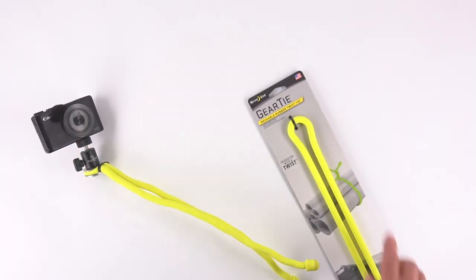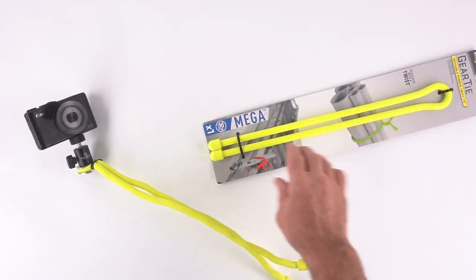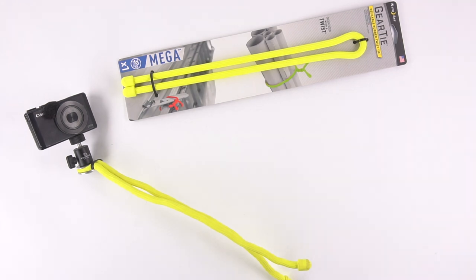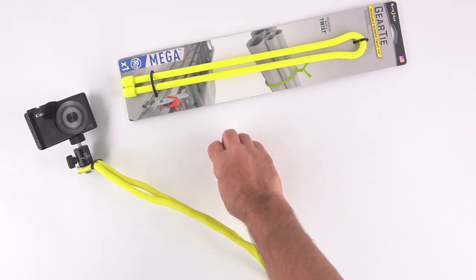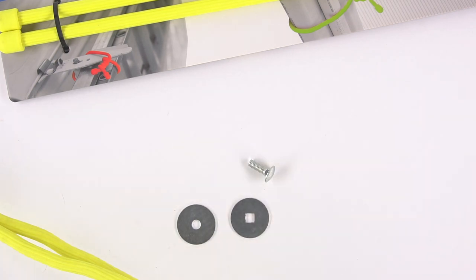So let's get started. We're gonna use one mega gear tie. It's a 32 incher. We're gonna use a quarter-twenty carriage bolt, and this is three-quarters of an inch long, and two fender washers. Those are the bigger ones that are larger around.